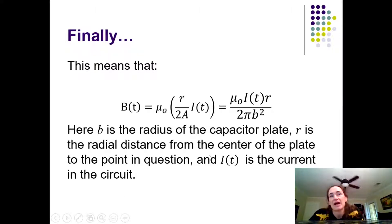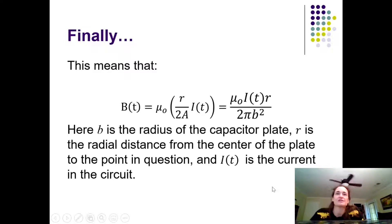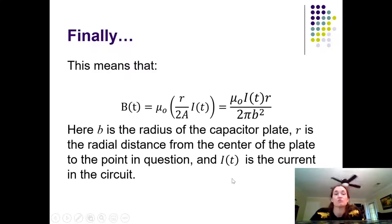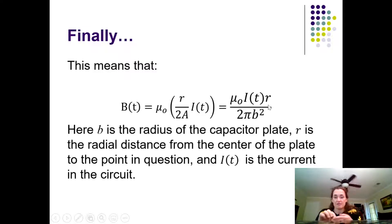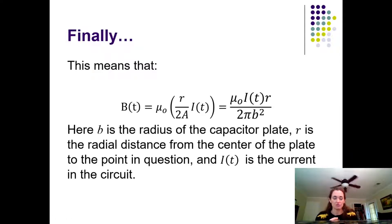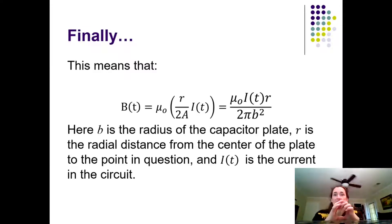This tells us the magnetic field between the plates decays exponentially with time. This makes sense: once the capacitor is fully charged, the electric field no longer changes, so dΦ_E/dt goes to zero and the displacement current vanishes. Also, the magnetic field grows with radial distance r from the center — because moving farther out (while still inside the plates) encloses more electric flux in the Amperian loop.